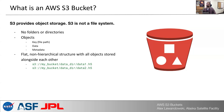Each object in an S3 bucket contains a key, which is its file path; the data itself, so the file; and then some metadata around the type of file it is, when it was saved, when it was last modified, and that type of information.